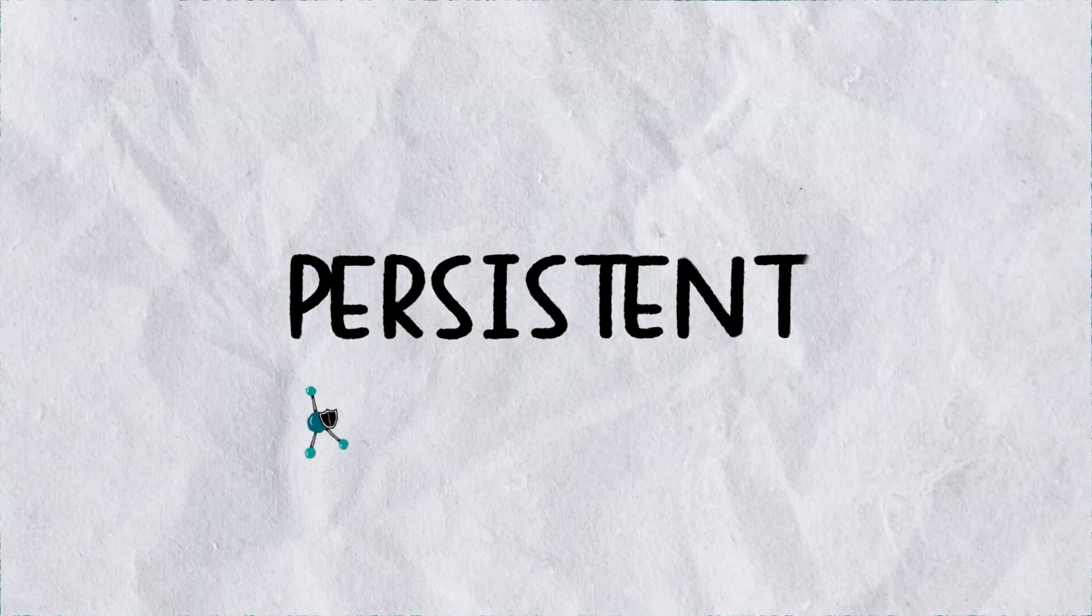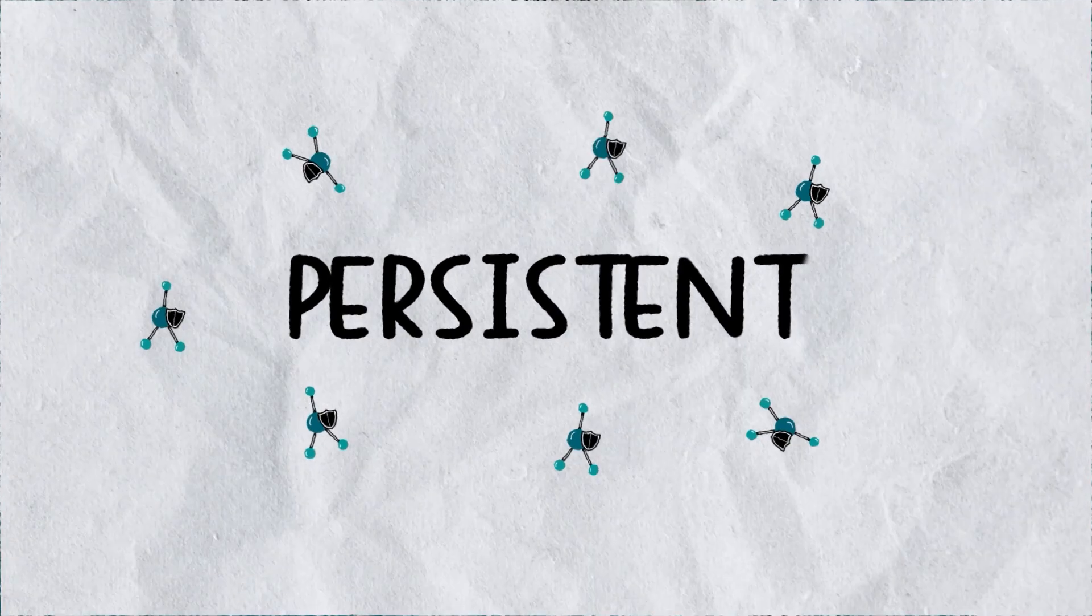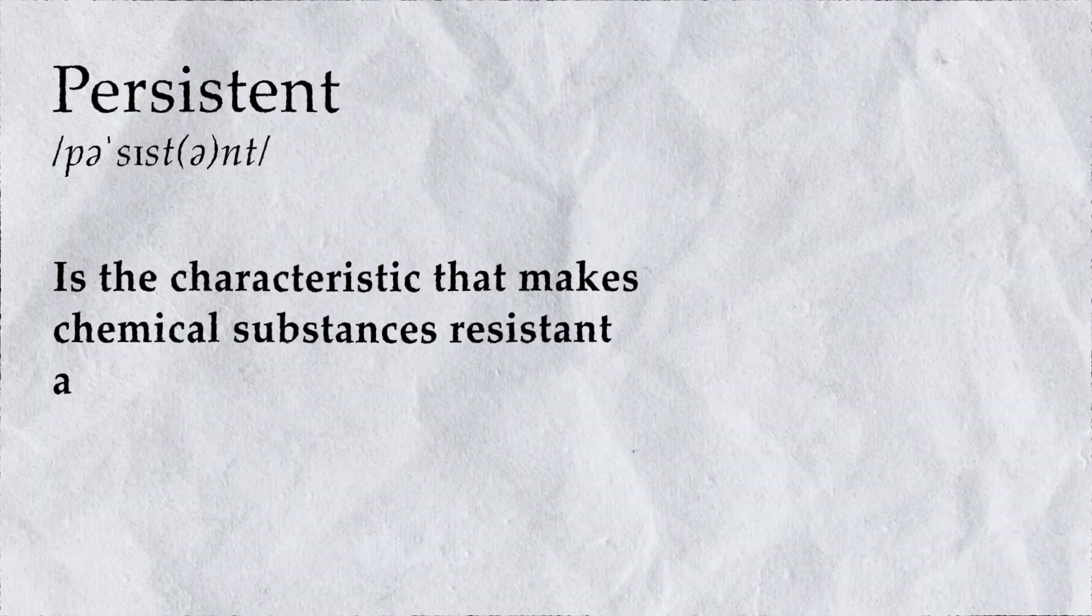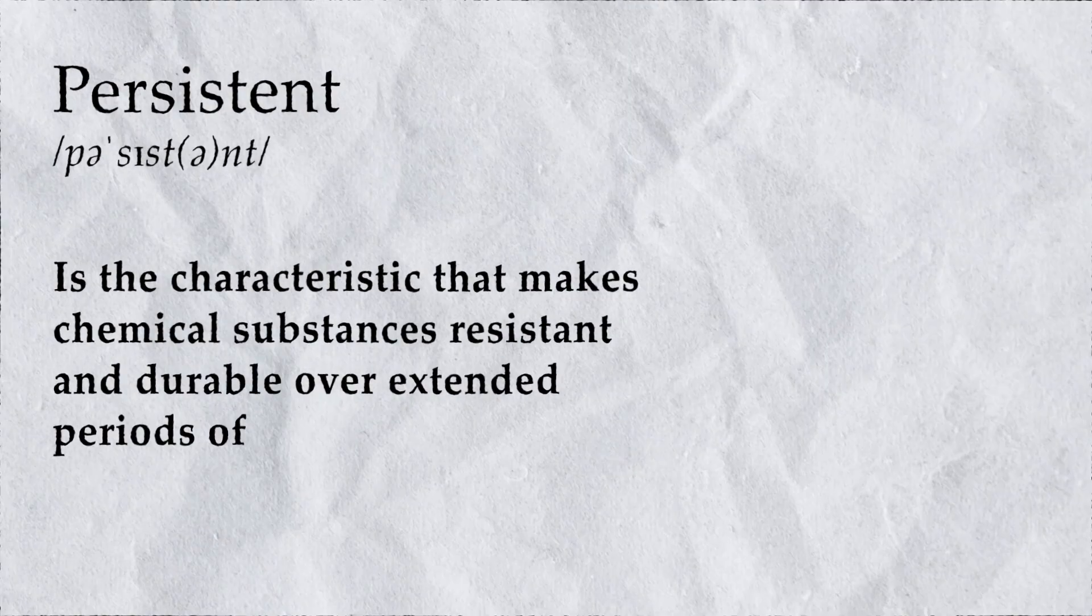So, is it clearer now what persistence is when it comes to chemical substances? Persistence is the characteristic that makes chemical substances resistant and durable over extended periods of time.